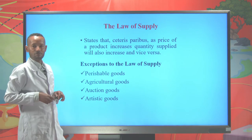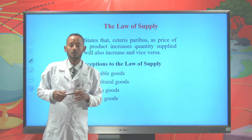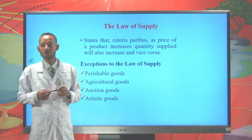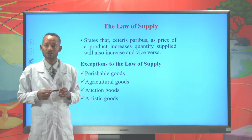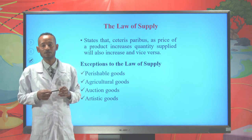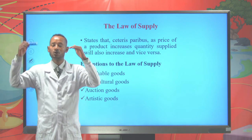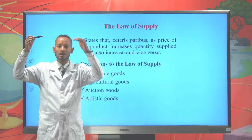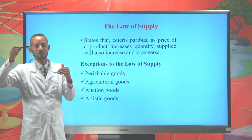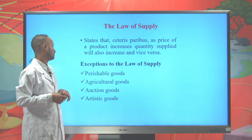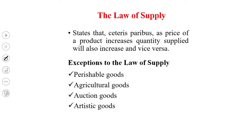Now let's move to the law of supply. The law of supply states that, other things remaining unchanged (ceteris paribus), as price of a commodity increases, then quantity supplied will also increase, and as price of a commodity decreases, quantity supplied will also decline. So, other things remaining unchanged, there is a direct relationship between the price of a commodity and quantity supplied.